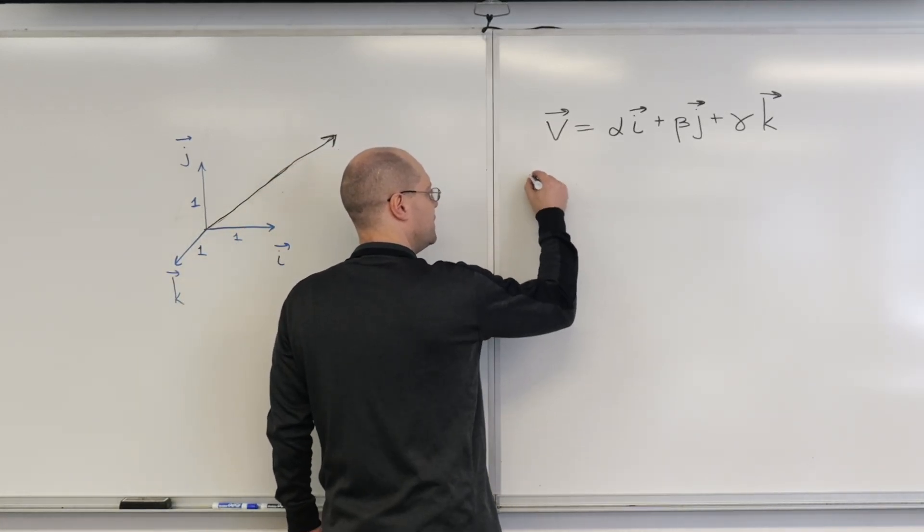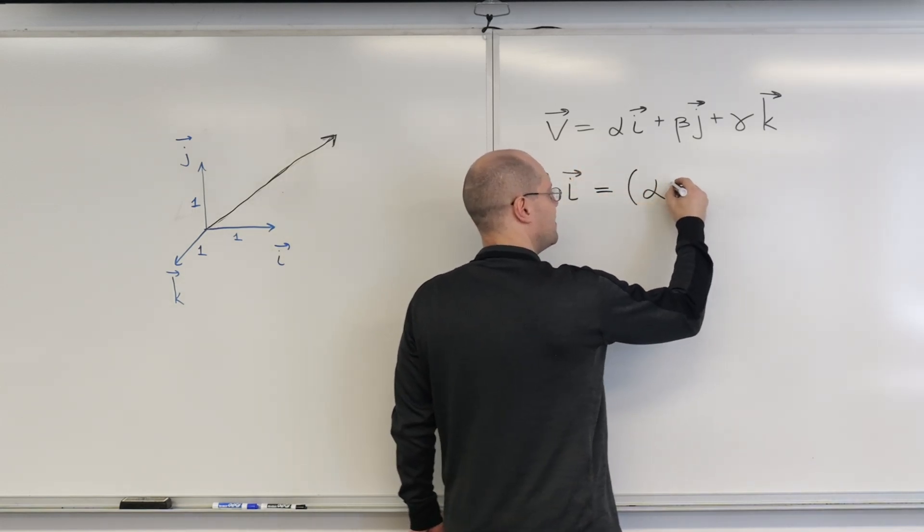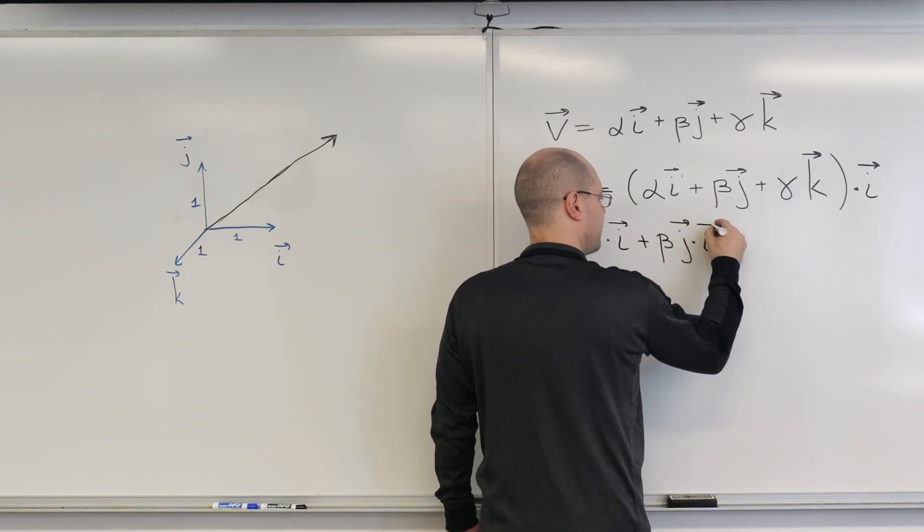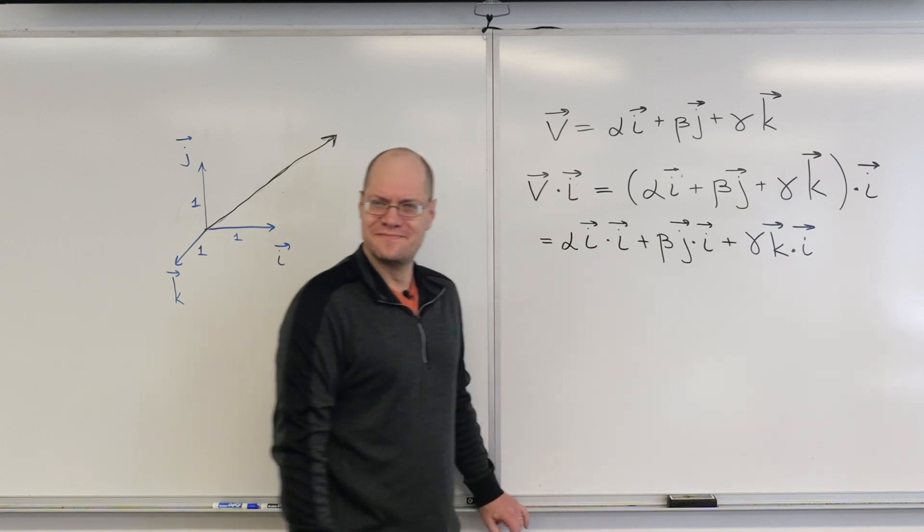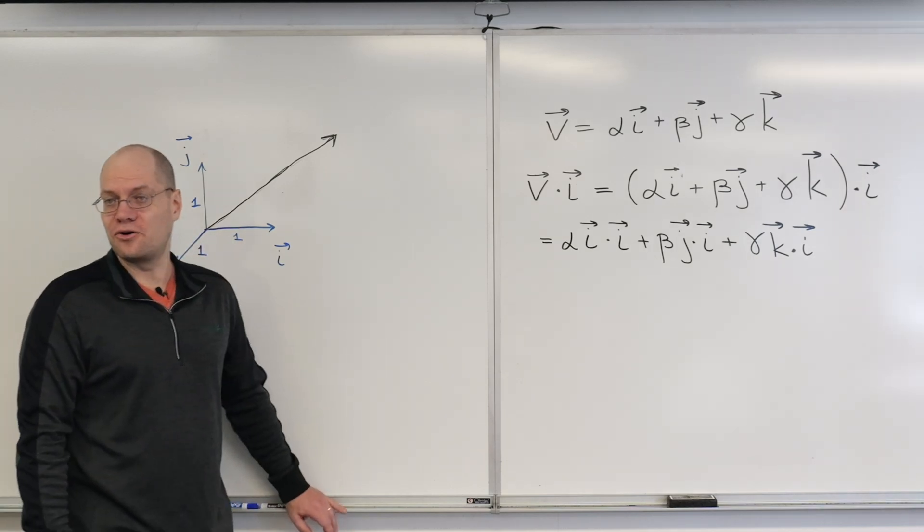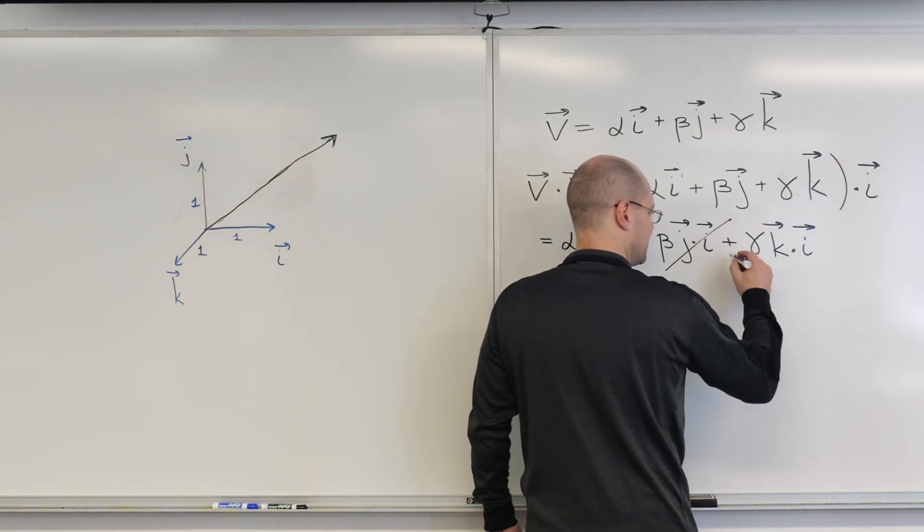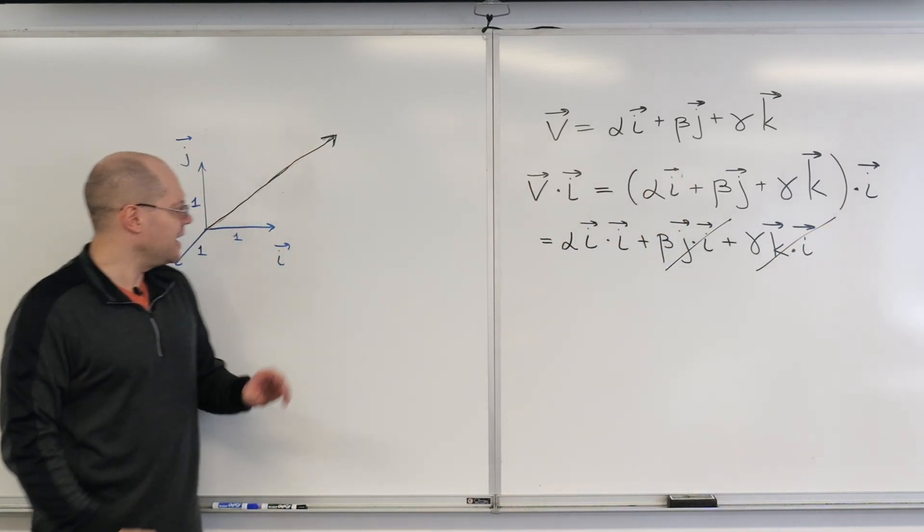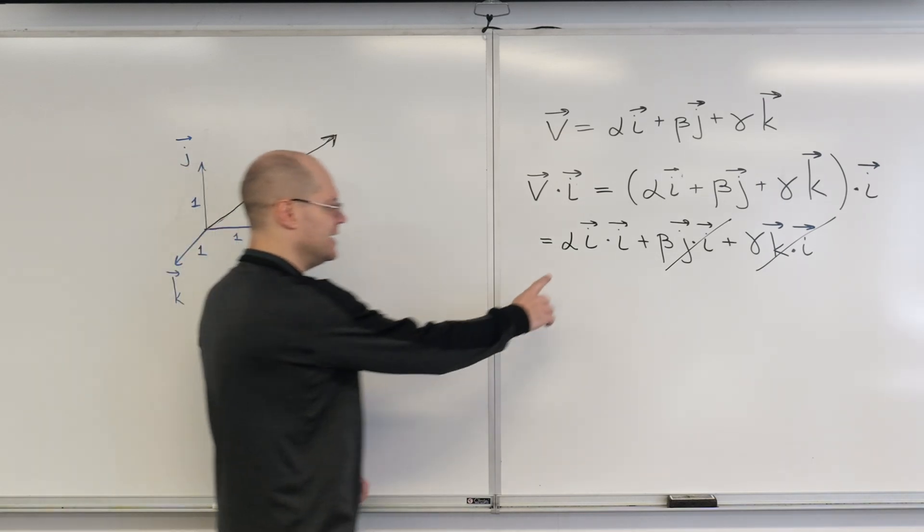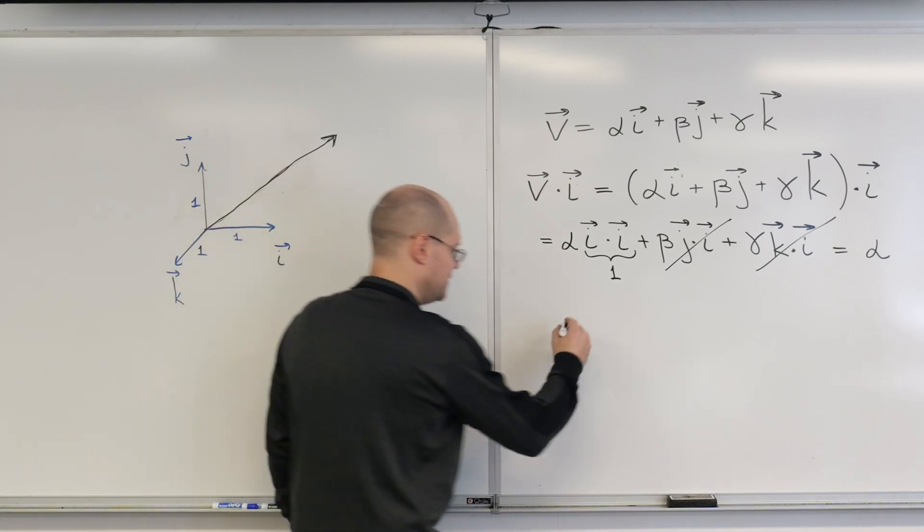So on the left we get v dotted with i. And on the right we have this linear combination. And the next step is of course applying the distributive law. And what do you notice? What's the thing that jumps out at you knowing that these three vectors i, j, and k are all orthogonal to each other? That's right, that's the whole point of it. This is zero because they're orthogonal. This is zero because they're orthogonal. And now you remember that not only are they orthogonal, they're also each unit length. And so i dotted with i is one. So the whole thing equals alpha. So alpha equals v dot i. How beautiful is that.